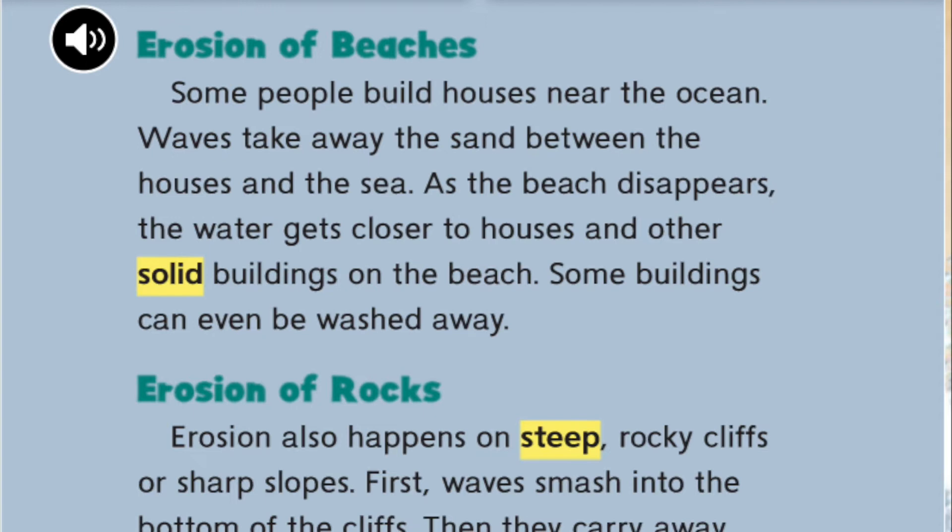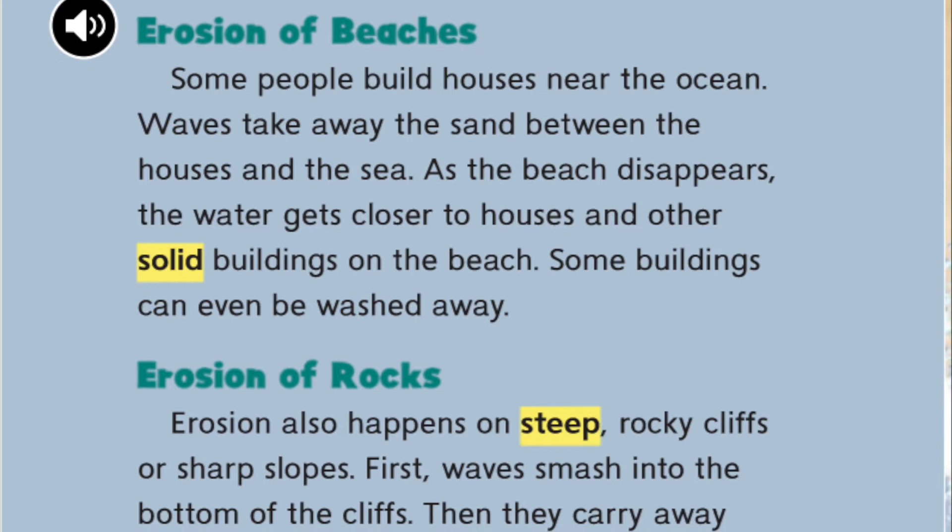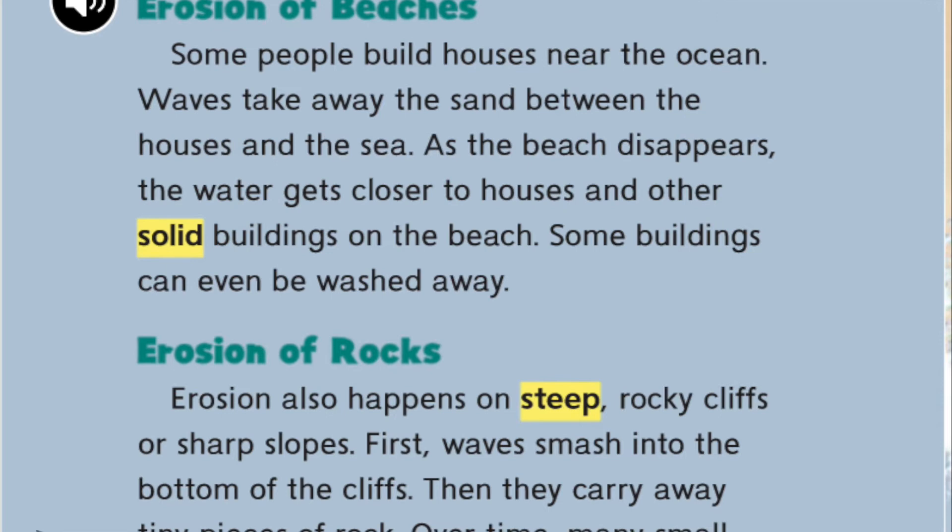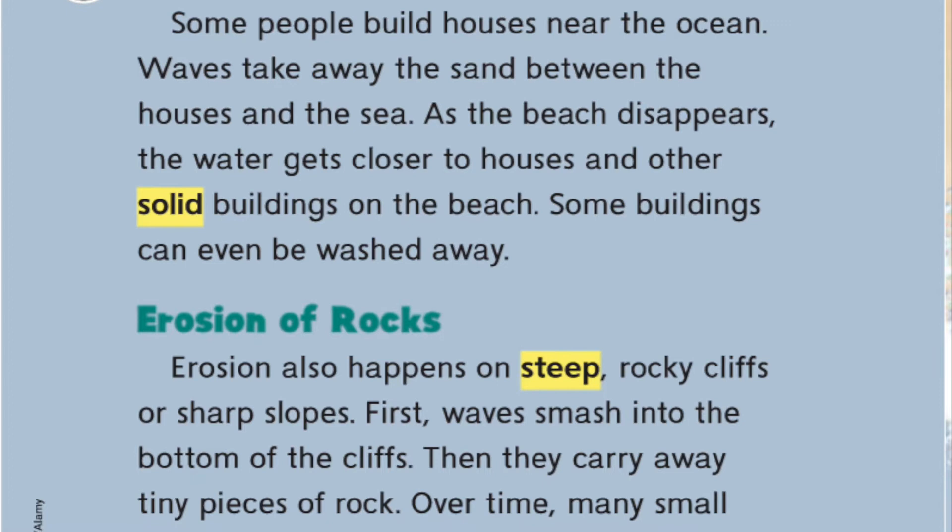Some people build houses near the ocean. Waves take away the sand between the houses and the sea. As the beach disappears, the water gets closer to houses and other solid buildings on the beach. Some buildings can even be washed away.